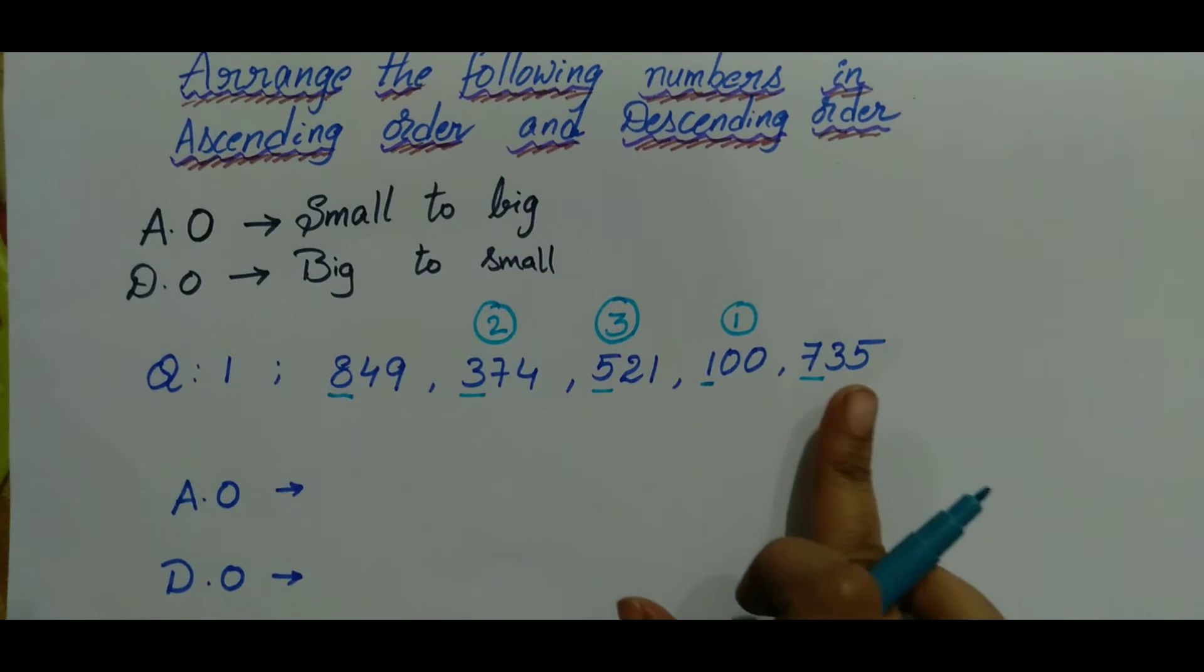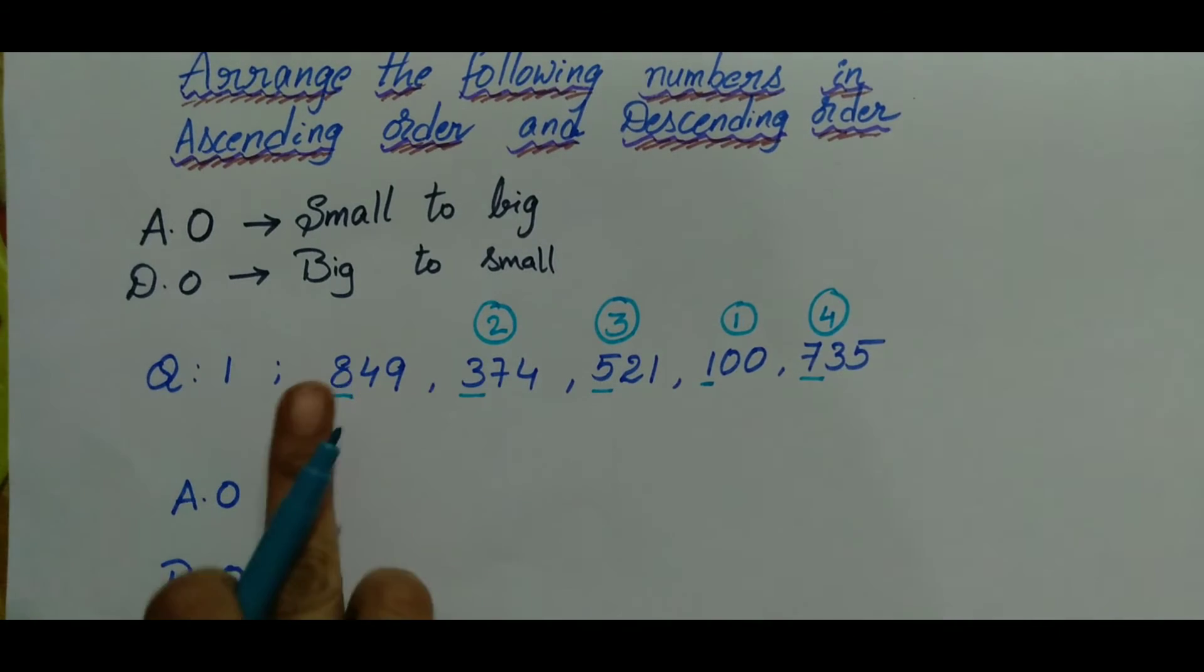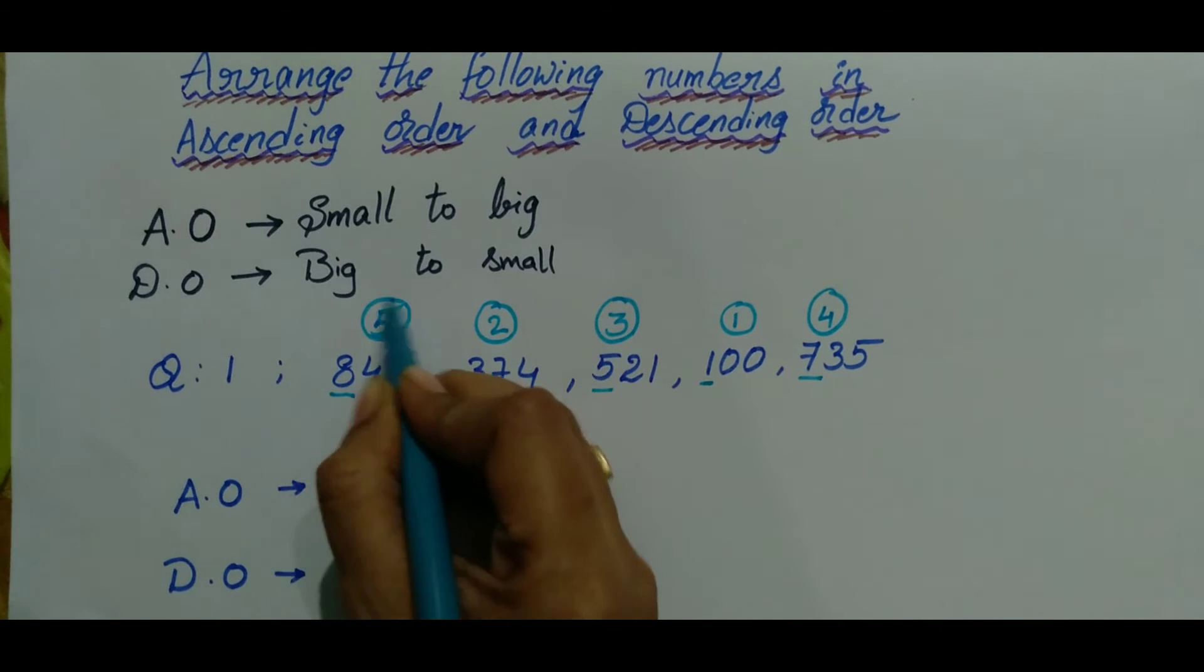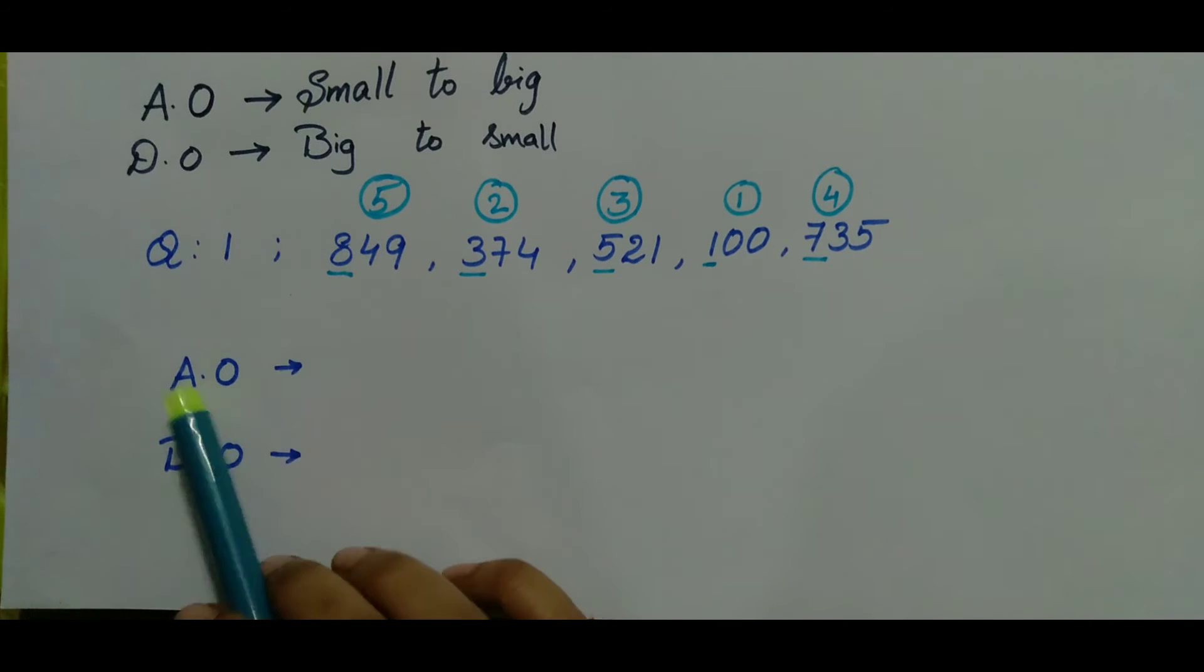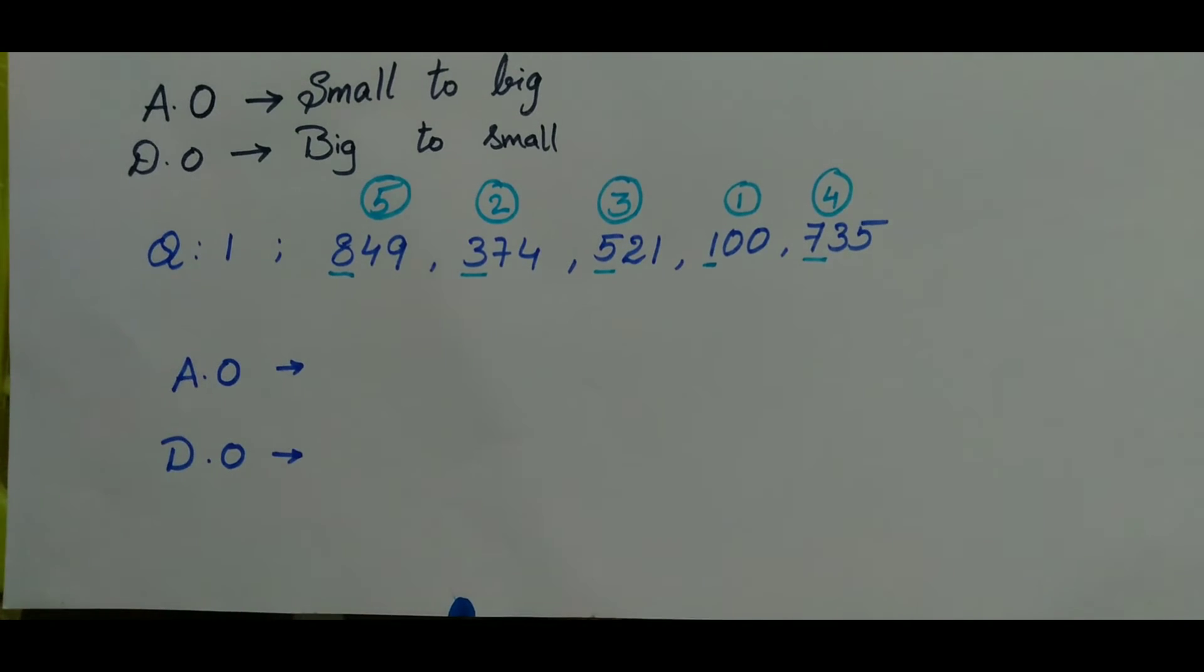After that, 7 is a greater number. So we write it in the fourth position. At last, 8 is the greatest number. We will write it in the fifth position. Let's write ascending order and descending order using these positions. So here,